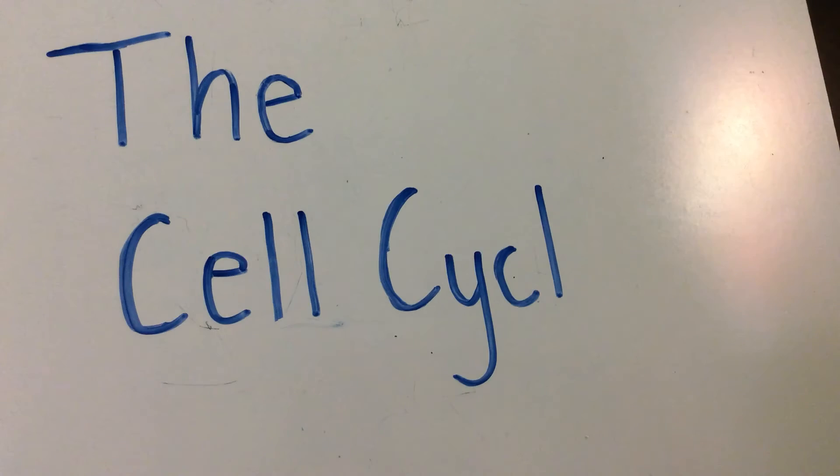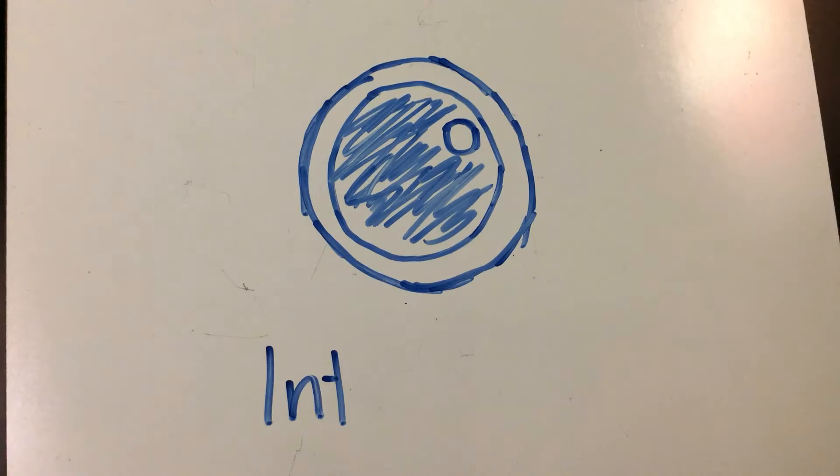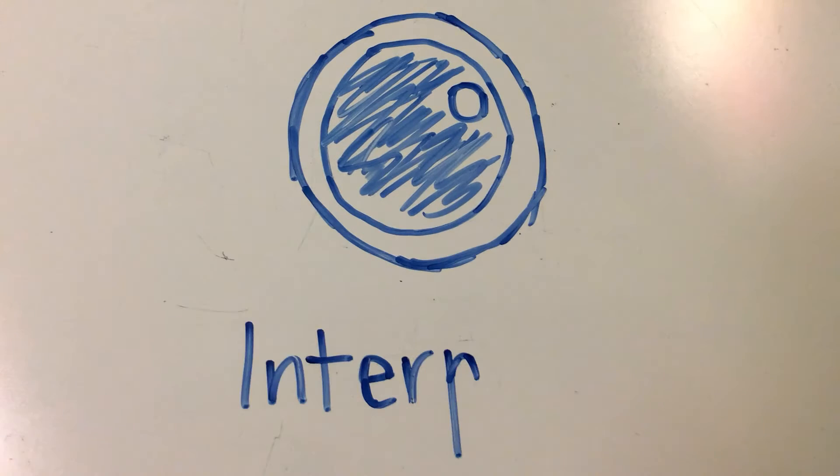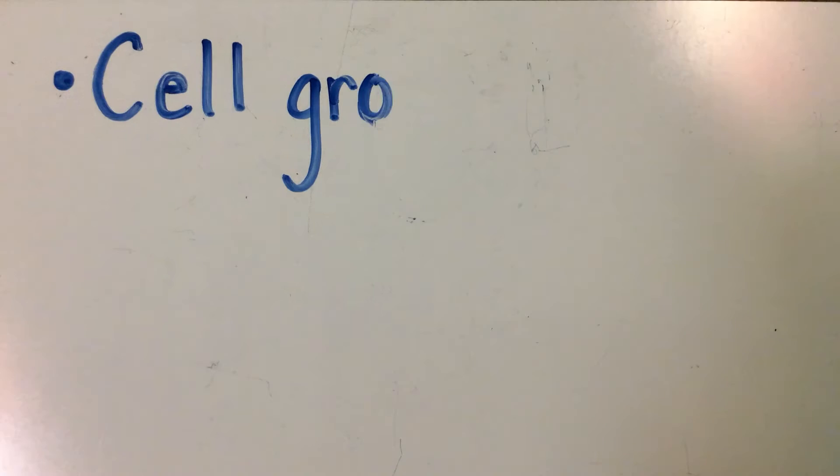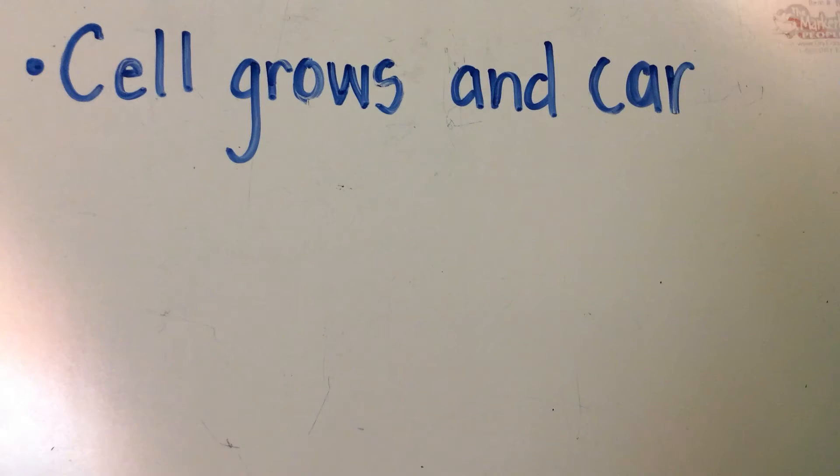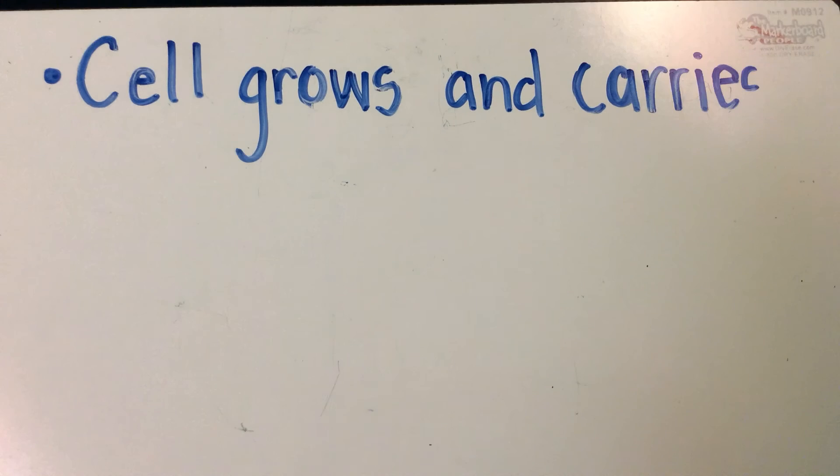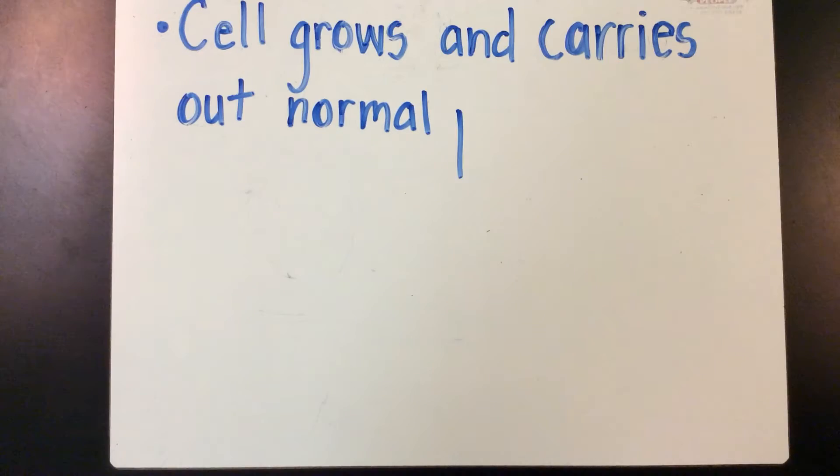This is the cell cycle. The first part of the cell cycle is the interphase. The interphase carries out normal cell processes as the cell grows and DNA replicates.